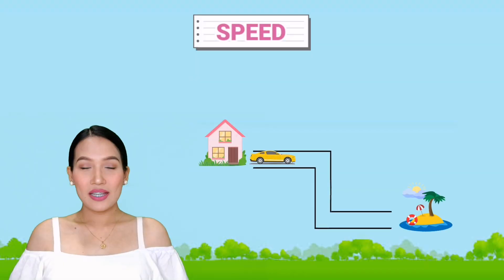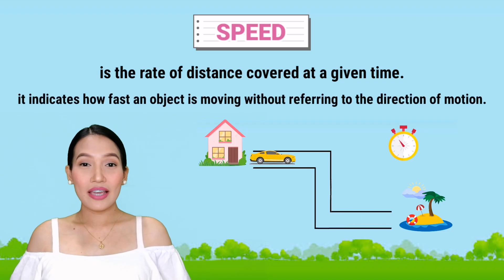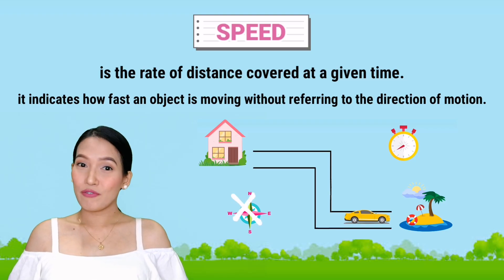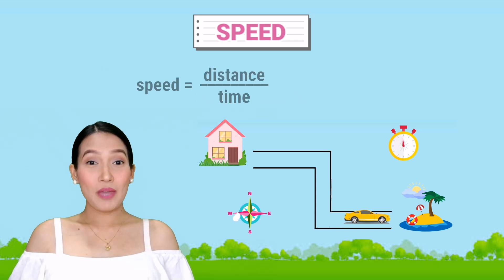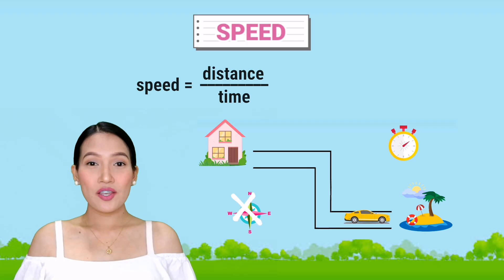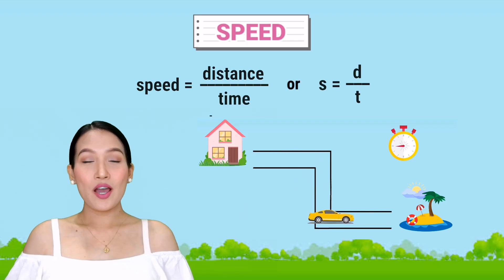People usually associate the term speed with fast-moving objects such as high-speed cars. Speed is the rate of distance covered at a given time. It indicates how fast an object is moving without referring to the direction of motion. Therefore, speed is considered a scalar quantity. Speed can be measured by dividing the distance covered by an object over the time traveled, or S equals D over T.